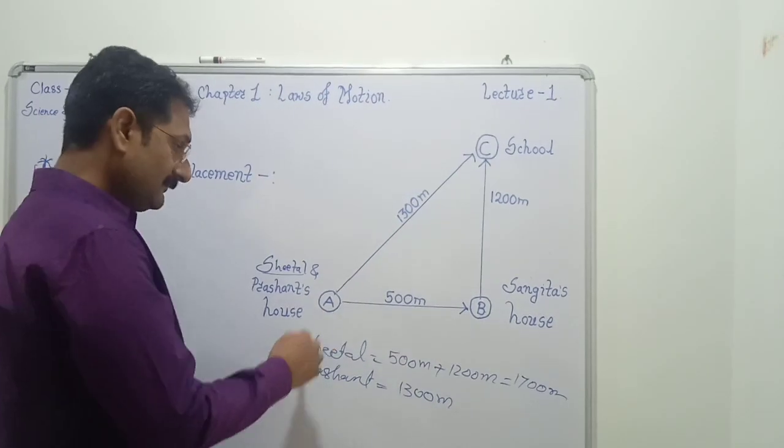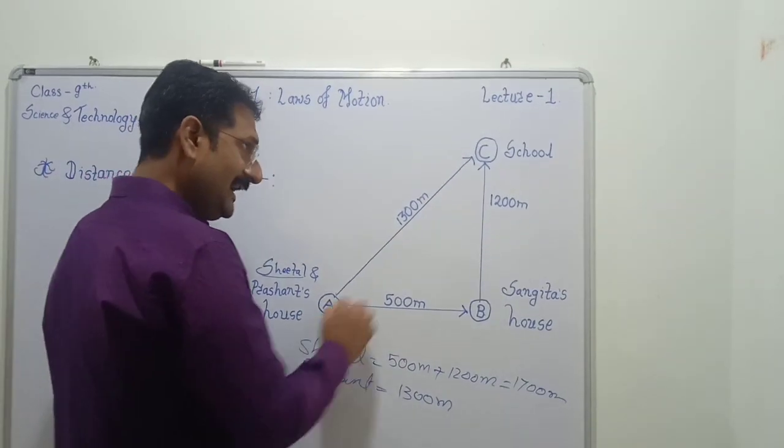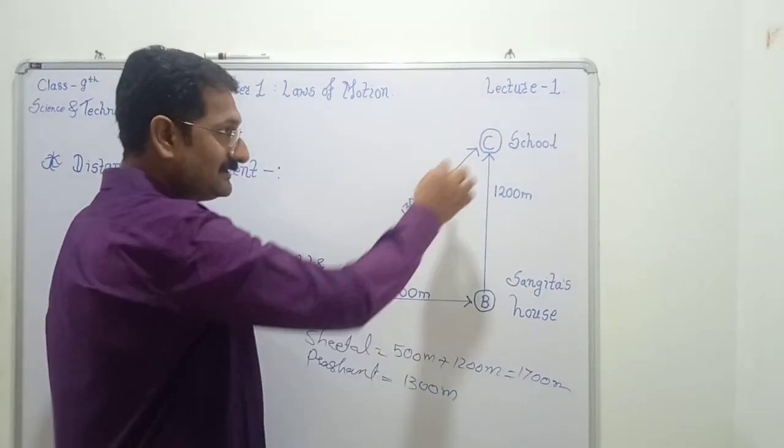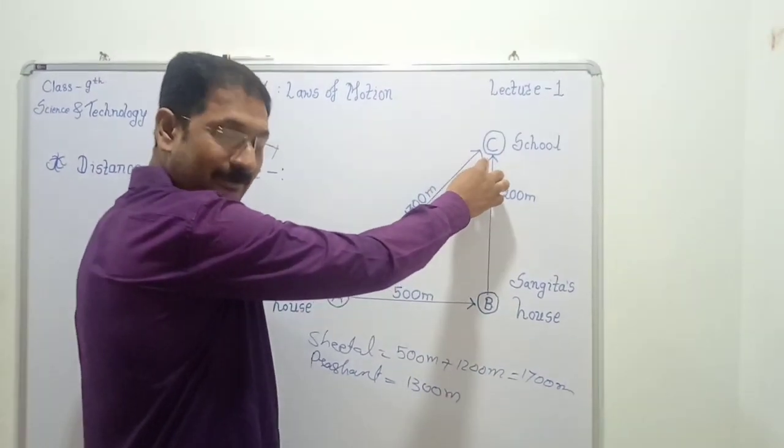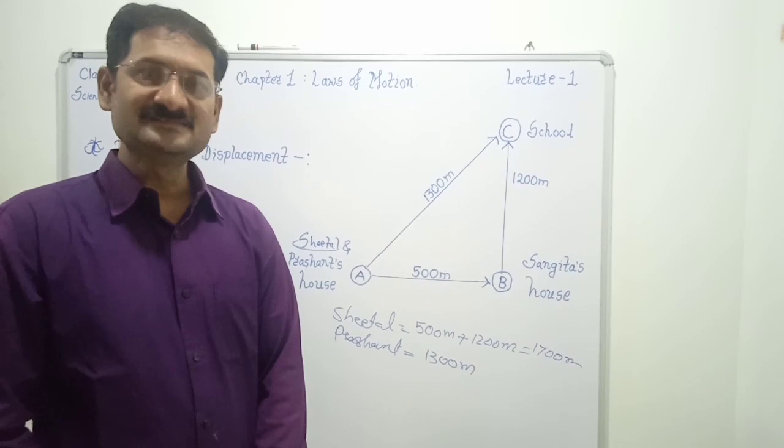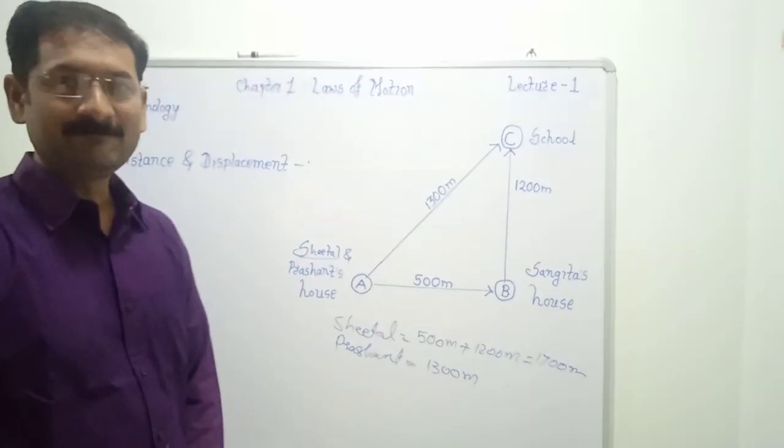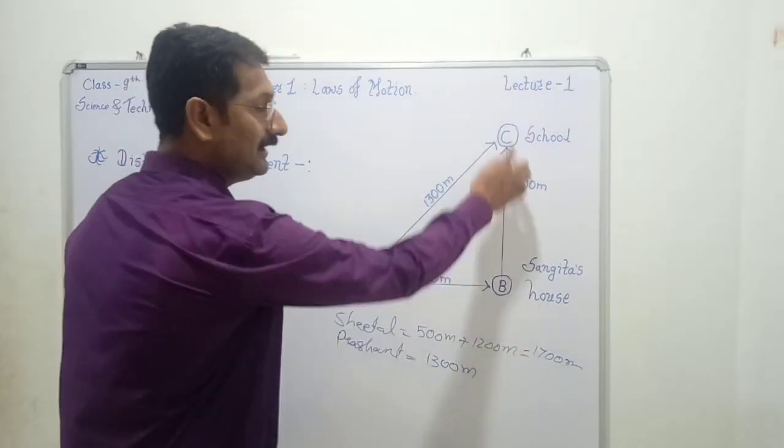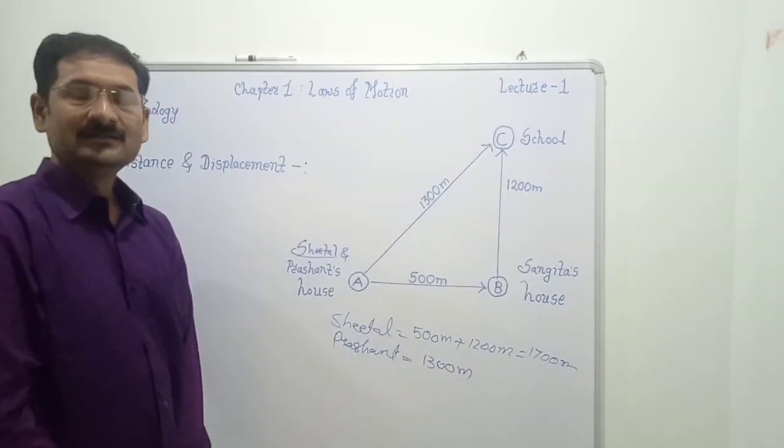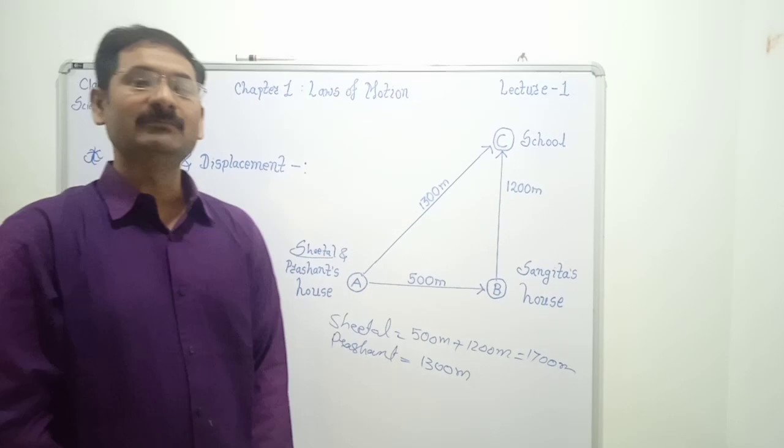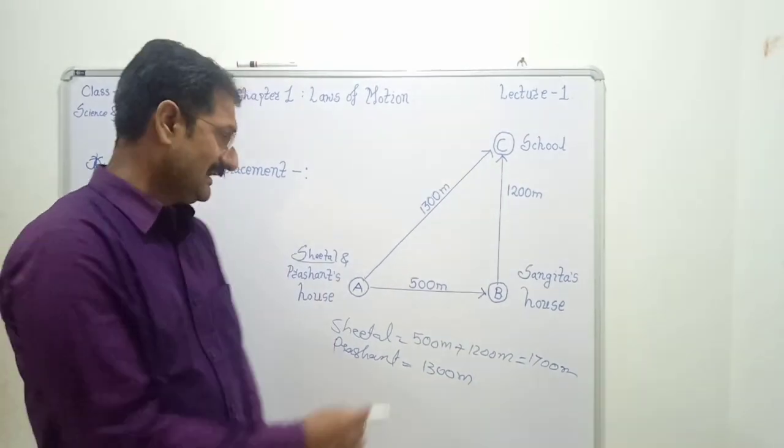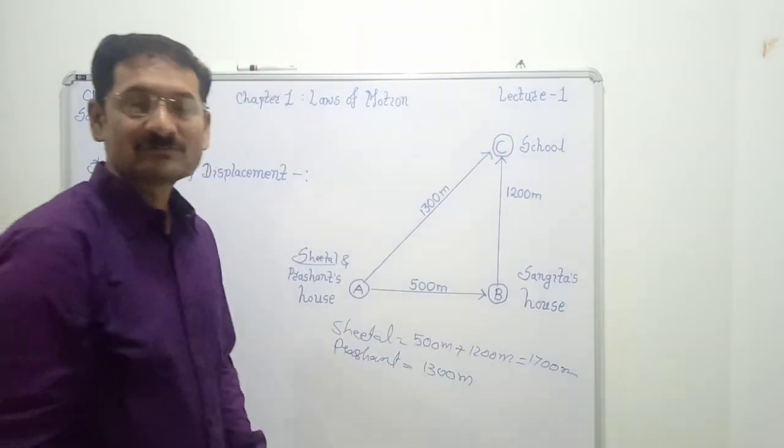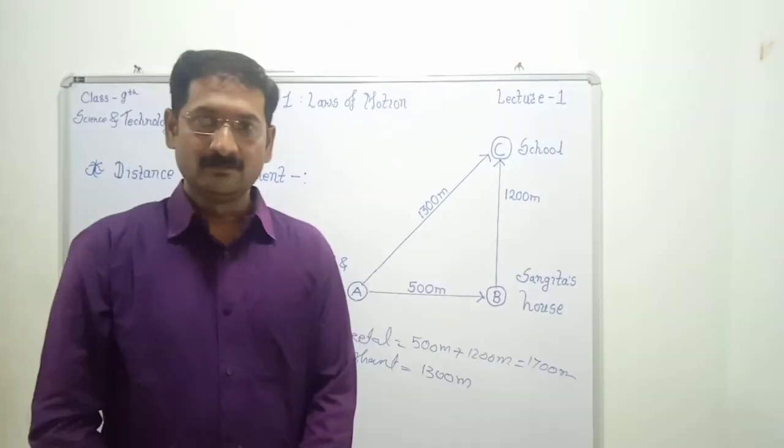Prashant goes from A to C and A is the initial point, C is the final point. Here, it is clear that the actual path followed by body is distance. And the shortest distance between initial point and final point, that is from point A to point C, is called displacement. Now we have to study difference between distance and displacement in detail.